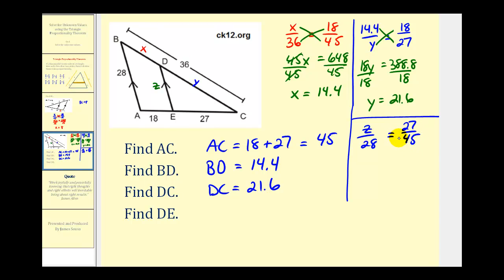And again, now we'll cross-multiply. 45Z must equal 28 times 27, which is equal to 756. And we'll divide both sides by 45. So the length of DE is 16.8 units.